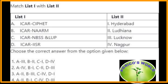Central Institute of Post-Harvest Engineering and Technology is located at Ludhiana, Punjab. It was established on 3rd October 1989 and is India's nodal institute for lead research in the area of post-harvest engineering and technology. NAARM — National Academy of Agricultural Research Management — is located at Hyderabad. National Bureau of Soil Survey and Land Use Planning is located at Nagpur. IISR — Indian Institute of Sugarcane Research — is located at Lucknow. So the answer here is the 4th option.